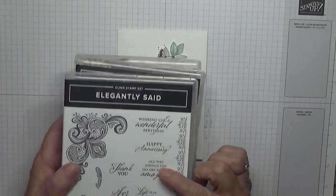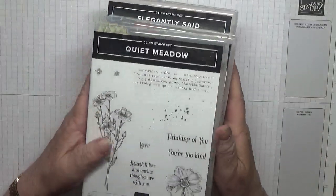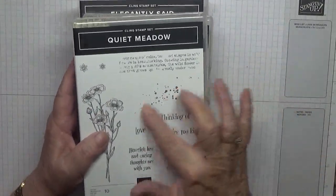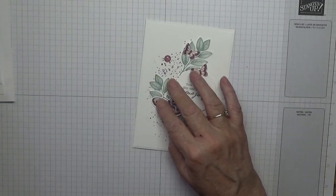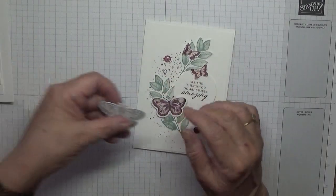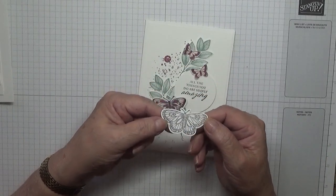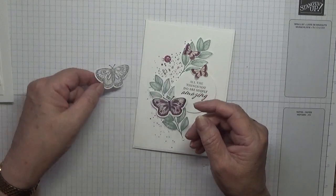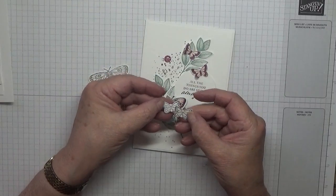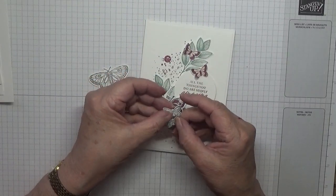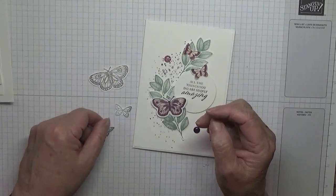I'm also using Quiet Meadow for the splatter dots. The butterflies which I've already stamped and cut out have come from Butterfly Brilliance, and the two small ones have come from Butterfly Gala. I never brought the stamp sets over because I've already cut out loads.